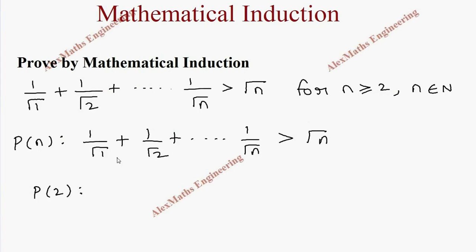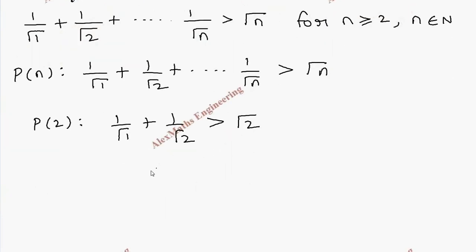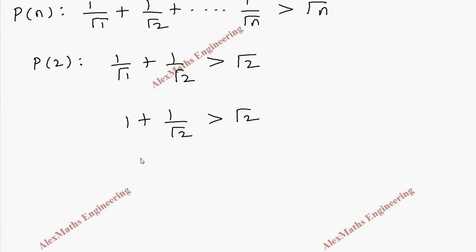For P(2), in the LHS I have to take only two terms: 1/√1 + 1/√2, and on the right-hand side the value of n is 2, so it is √2. Here √1 is 1, so 1/1 is 1, giving us 1 + 1/√2 > √2.